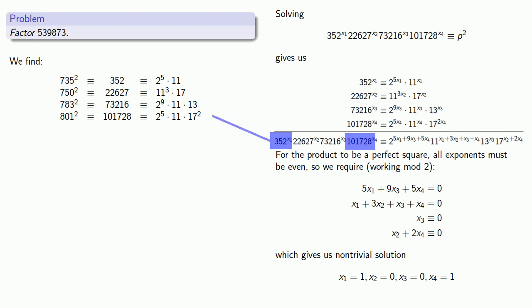Remember 352 is 735 squared, and 101728 is 801 squared. Since we have the prime factorizations of 735 squared and 801 squared, we can write the product in prime factored form.